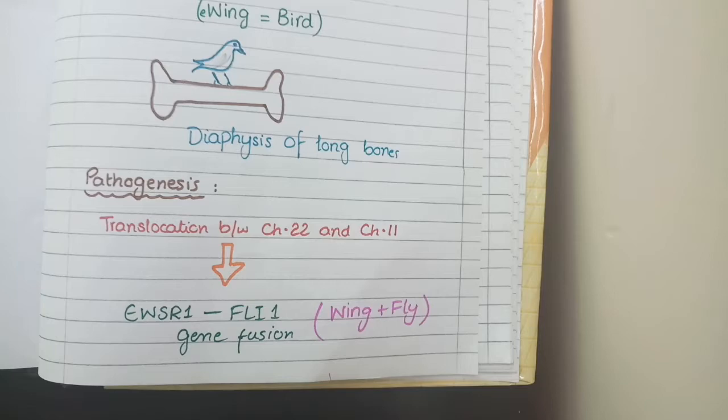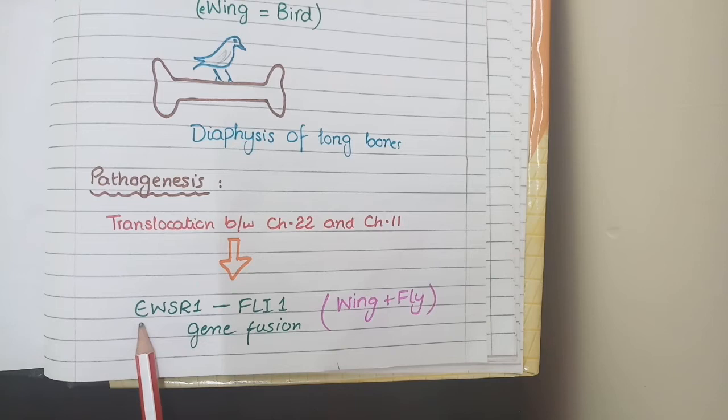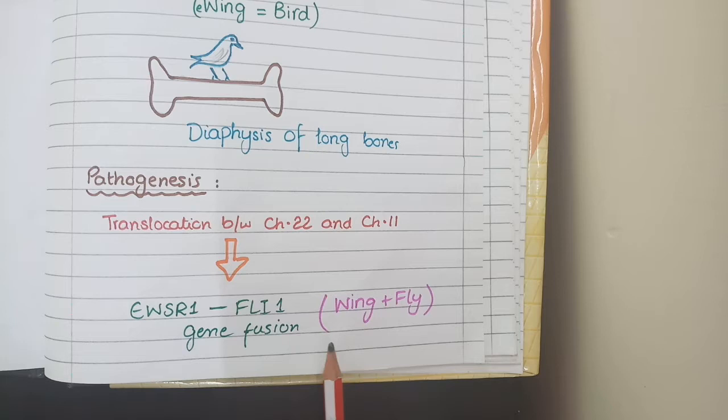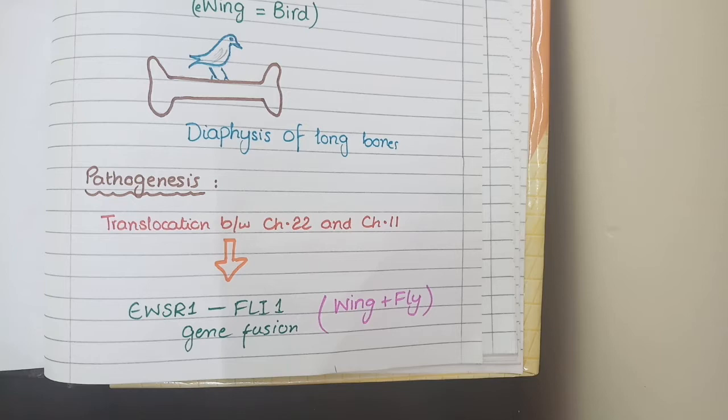As far as pathogenesis is concerned, Ewing sarcomas are caused by translocation between chromosome 22 and chromosome 11. This translocation results in the formation of a fusion gene product: EWSR1 and FLI1, where EWSR stands for Ewing sarcoma. You can remember this as 'wing' plus 'fly' — WING reminds you of EWING (Ewing Sarcoma gene 1, EWSR1) and FLI means FLI1. So the fusion gene product is Ewing Sarcoma FLI1.